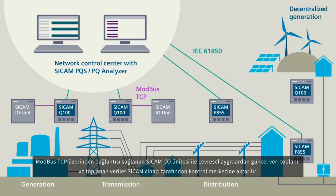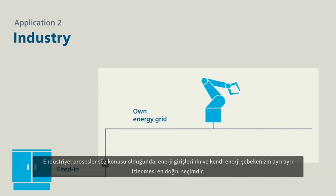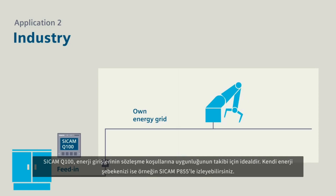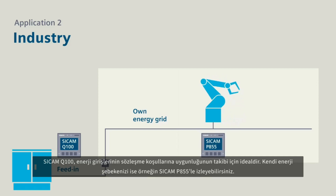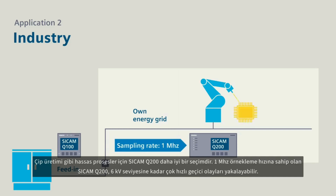Application two: industry. For industrial processes it makes sense to separately monitor the feed-in of energy and your own energy grid. For monitoring the fed-in energy according to contract, it is best to use a Secamp Q100. Monitor your own energy grid with a Secamp P855.